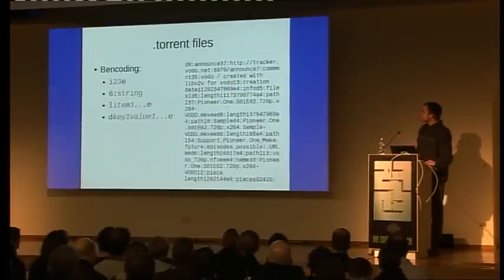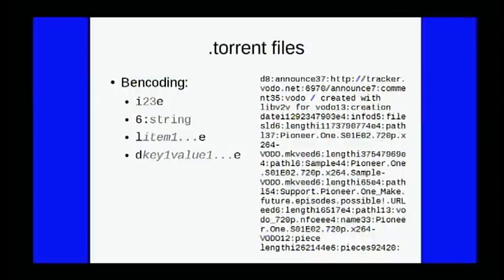One recurrent topic is B-encoding, or binary encoding, which is used for the BitTorrent extension protocol, for DHT packets, and of course for torrent files themselves. The data format has four types: integers, length-prefixed strings, lists, and dictionaries — that's all. It's kind of like JSON, but it's binary safe.